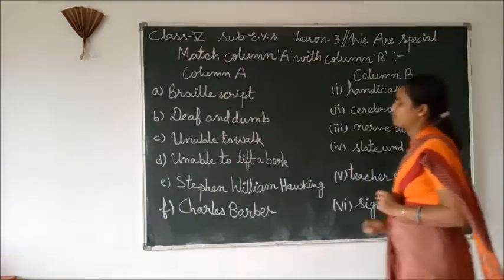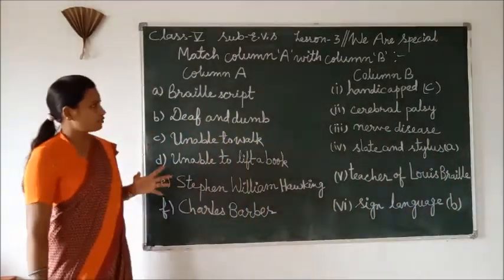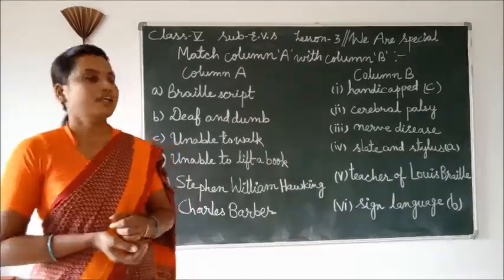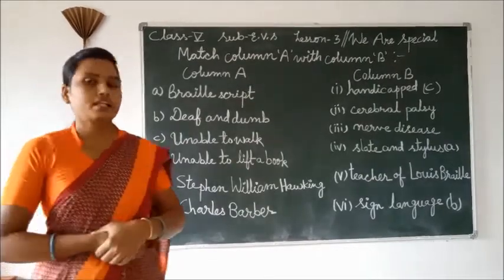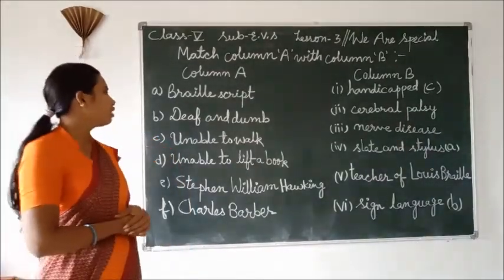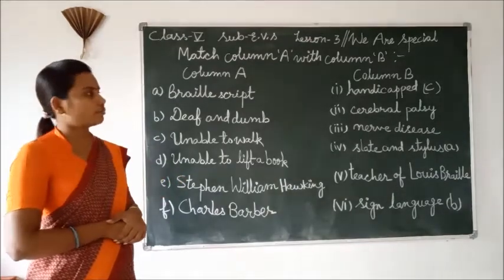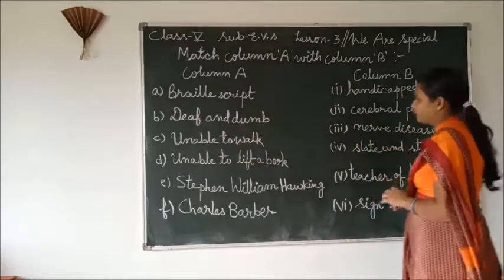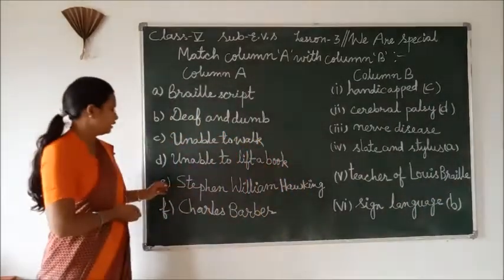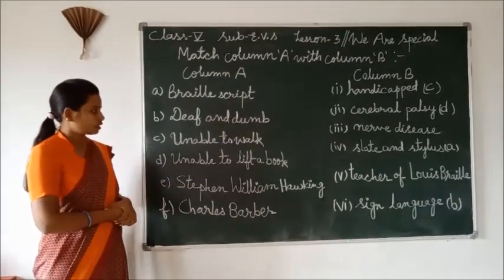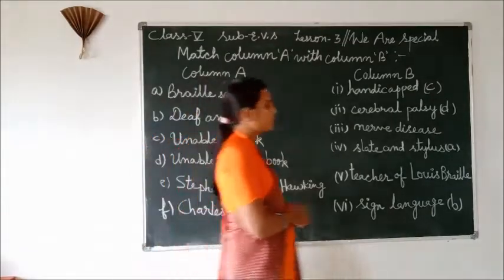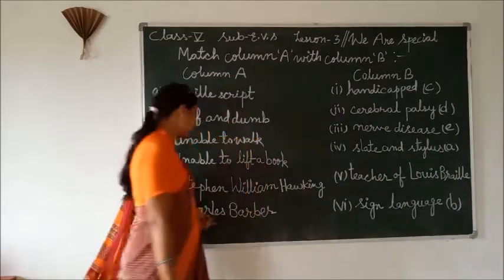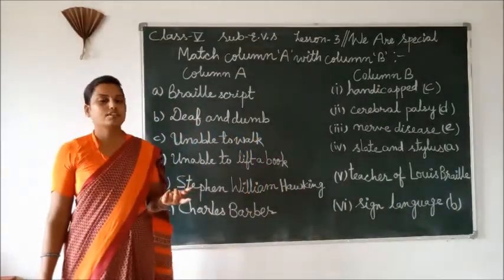D: Unable to lift a book — cerebral palsy. E: Stephen William Hawking — nerve disease.